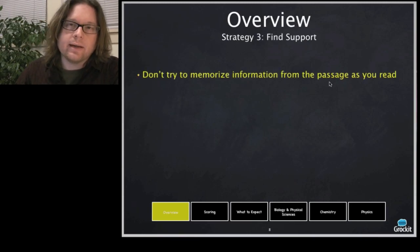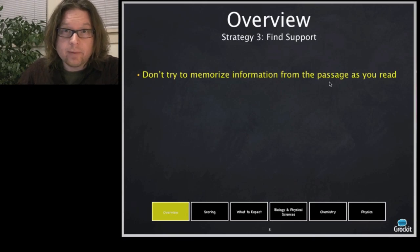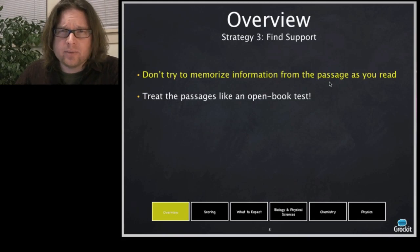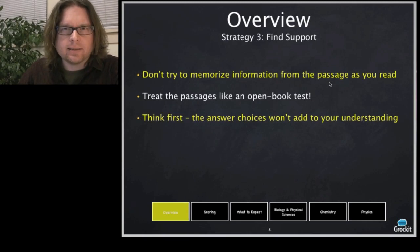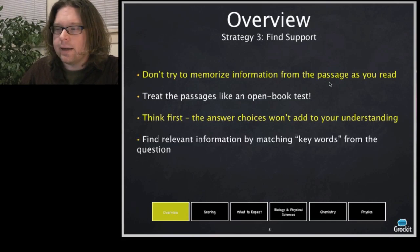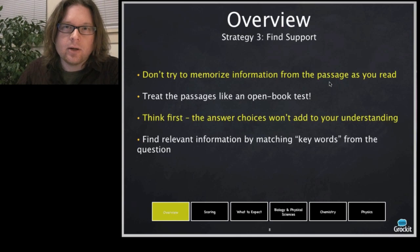Find support in the passage. Everything you need to answer the questions is in the passage — they don't ask about your outside science knowledge. If you have outside knowledge it helps, but you don't need it at all. Treat this like an open book test. Don't try to memorize the passage information; just go look it up. Think first — the answer choices won't add to your understanding on the science section. Match keywords: scientific names are specific and unique, so matching them can help you find the right section of the passage or graph.